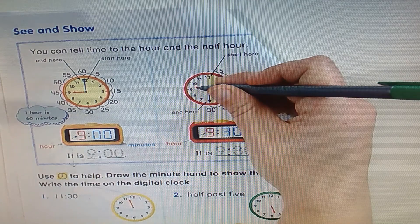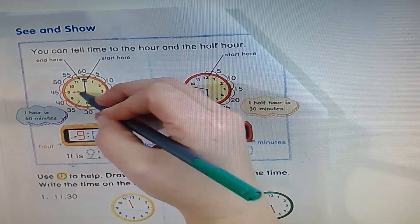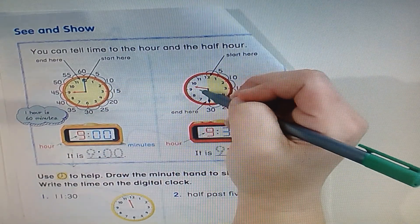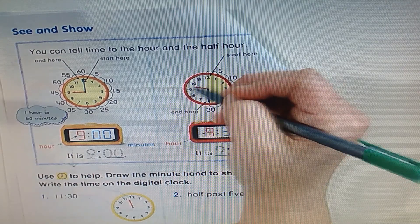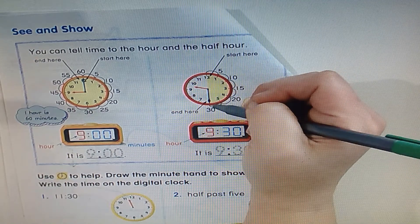And that is the way that you can tell with the hour hand if it's directly to the hour or if we're past the hour. If that hand is pointing directly at the nine, it would be nine o'clock. But since it's in between, we know it's past the hour, which is now at 9:30.